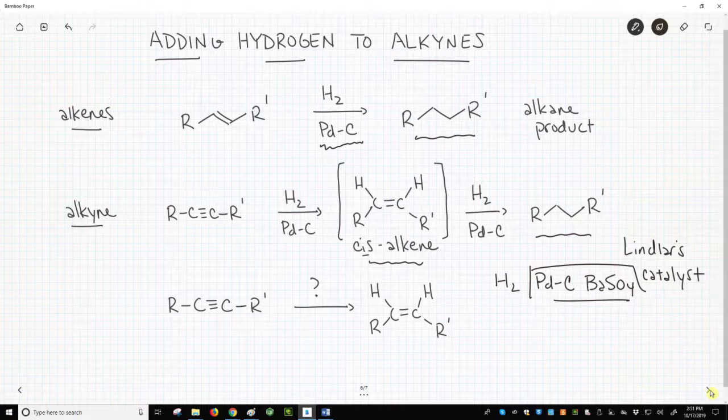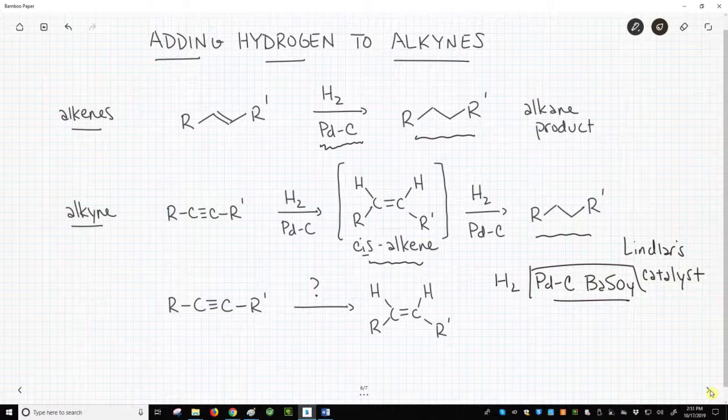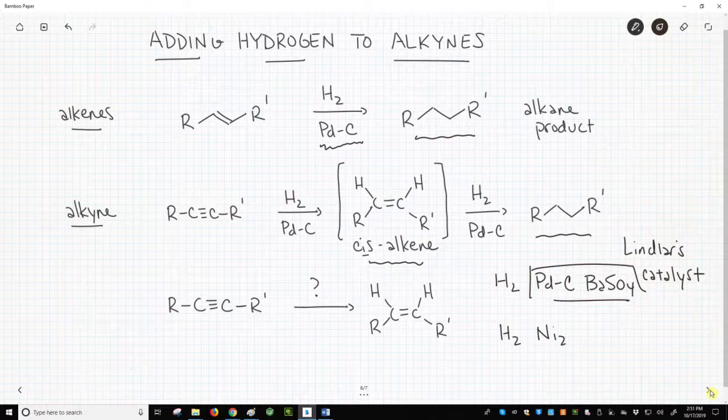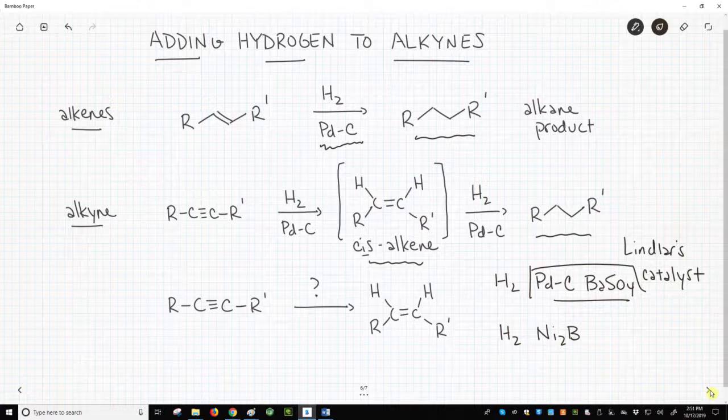The presence of barium poisons the catalyst and allows the reaction to stop at the alkene. The more modern approach is to use a different catalyst, H2 with nickel boride. Great. We can make the cis alkene.